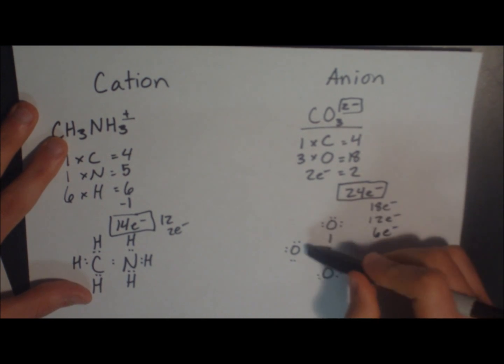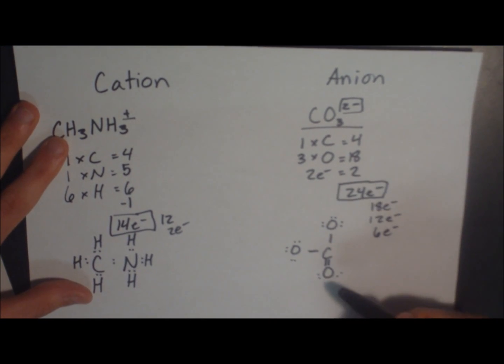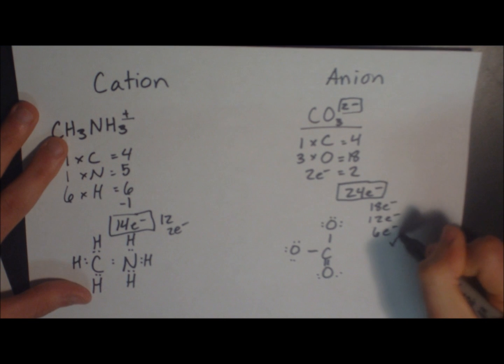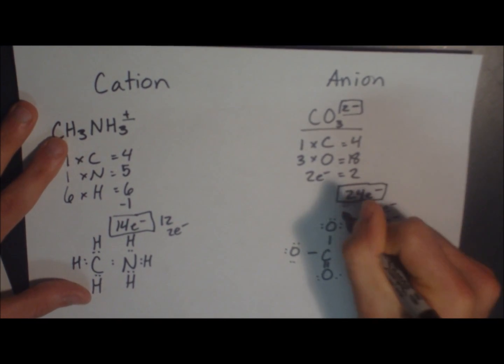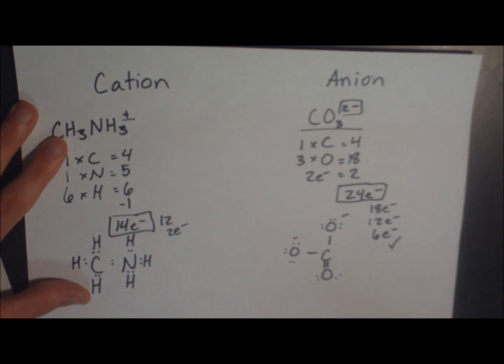And then add in two more. So let's just see. 1, 2, 3, 4, 5, 6, 7, 8 for the carbon. And now the oxygen has 2, 4, 6, 8. We've used our 24 electrons. Octet rules are satisfied. Now we just have to draw in our negatively charged atoms. And we're good.